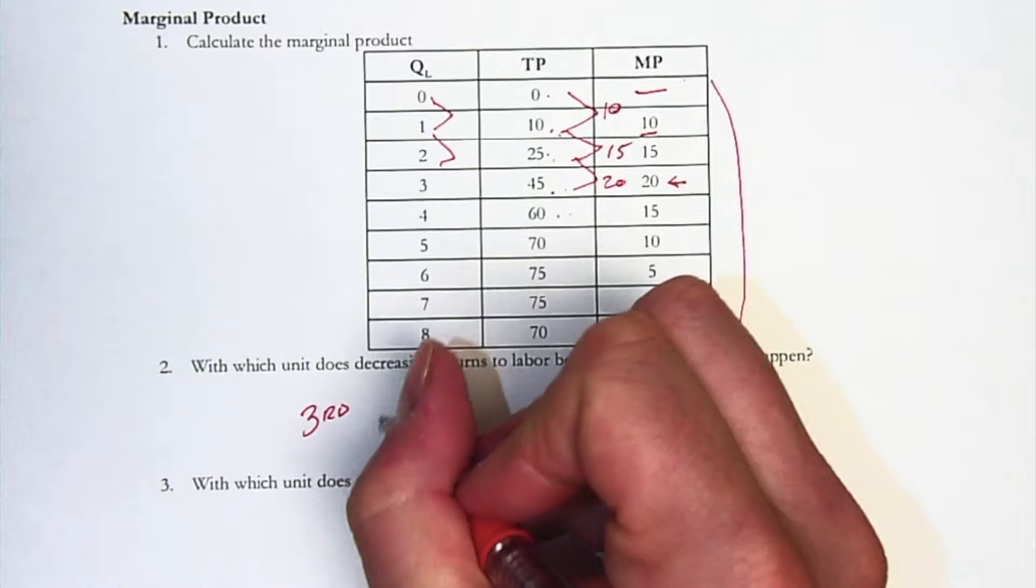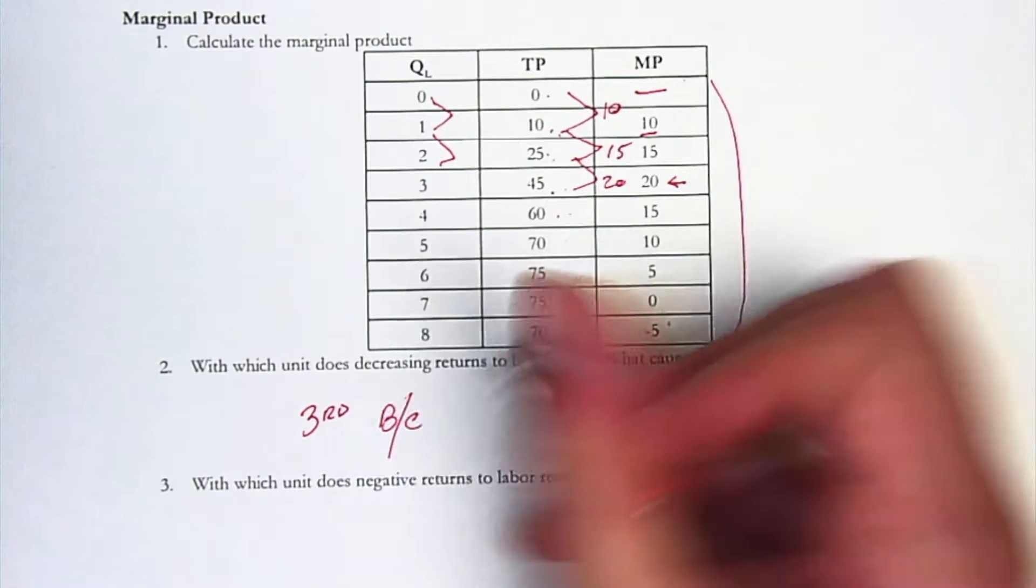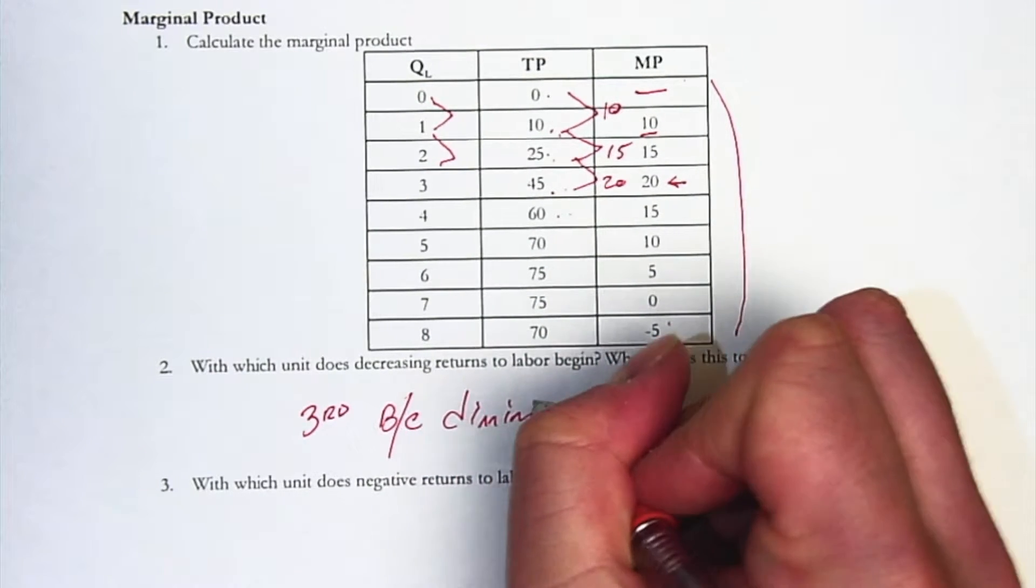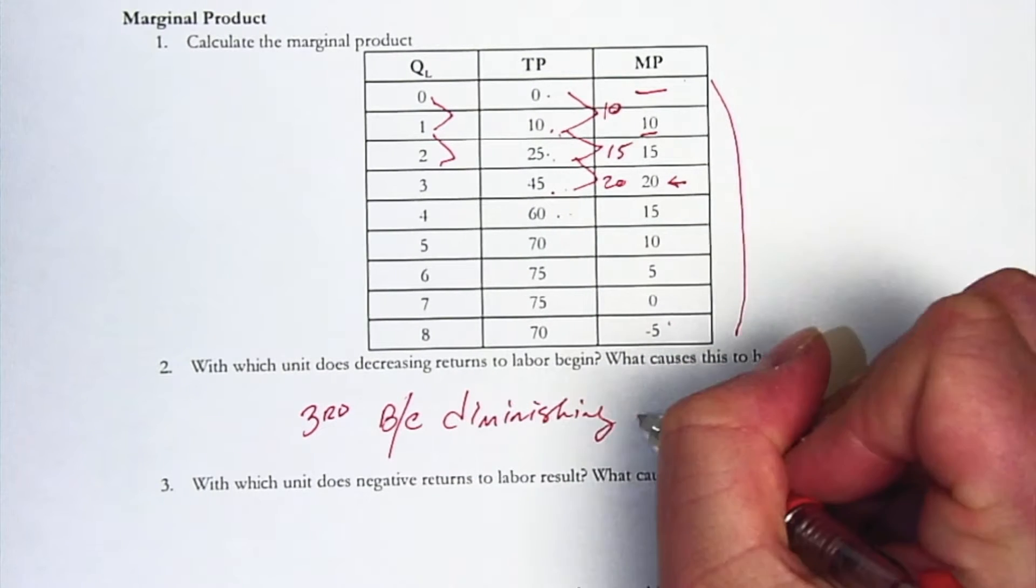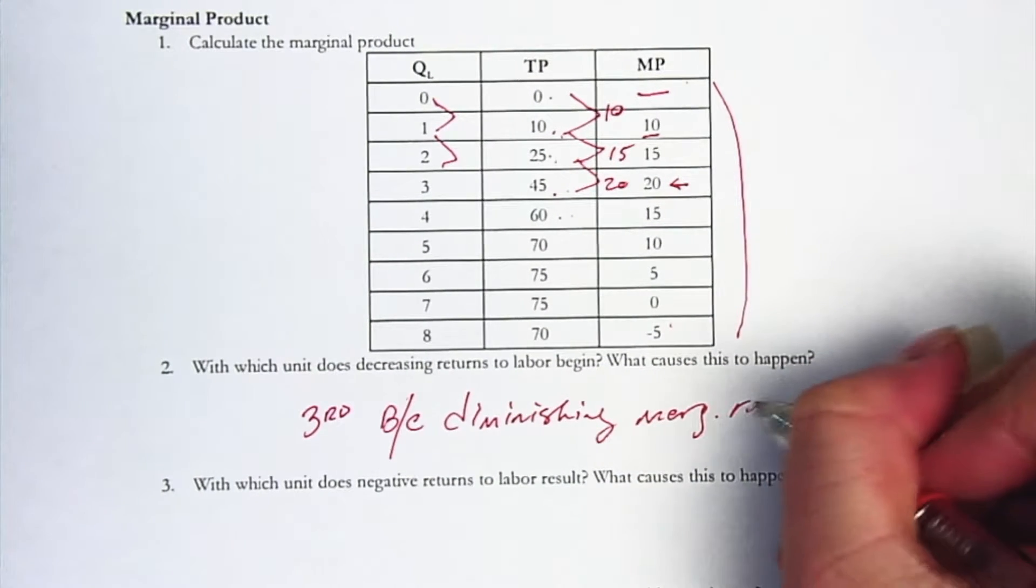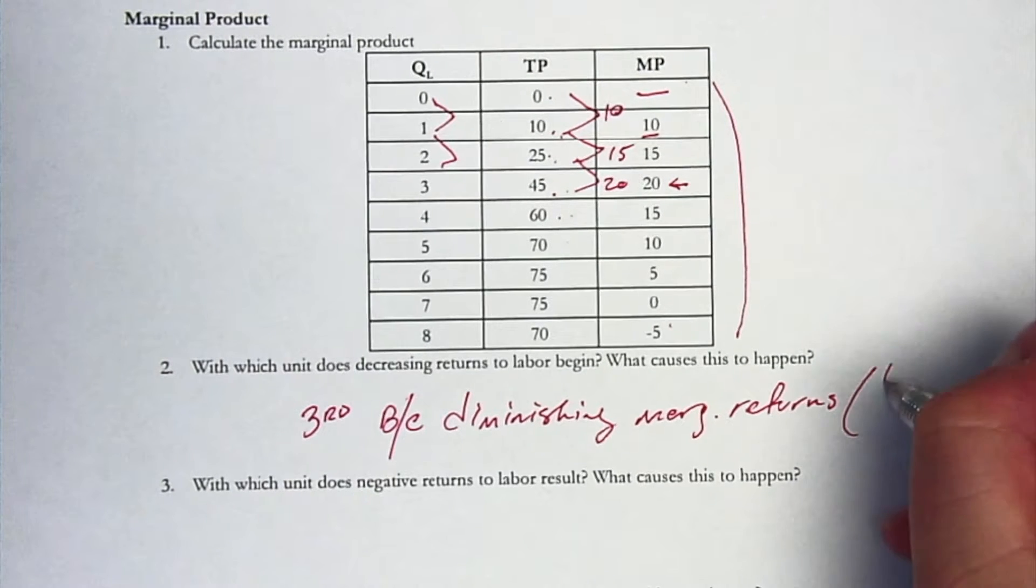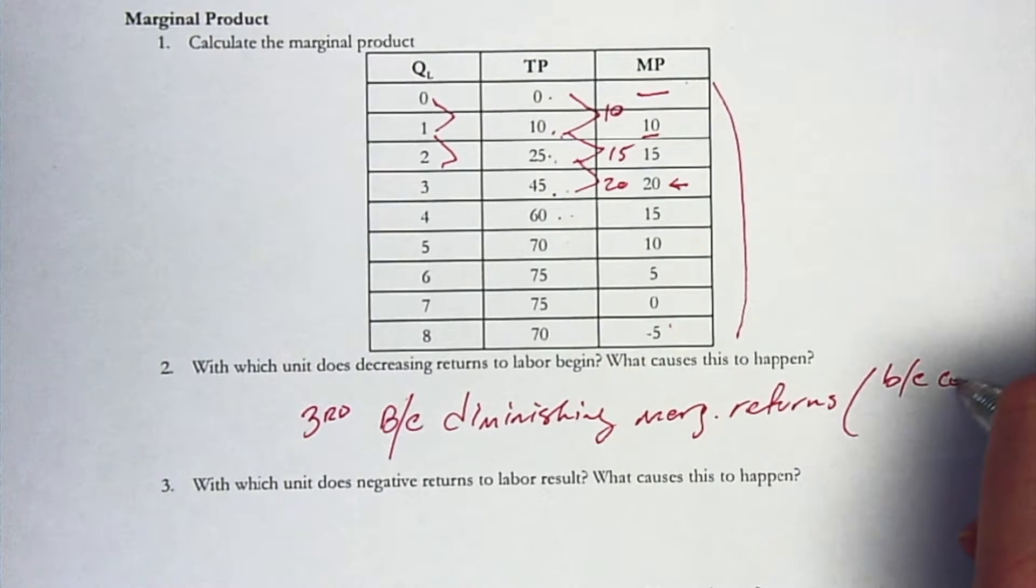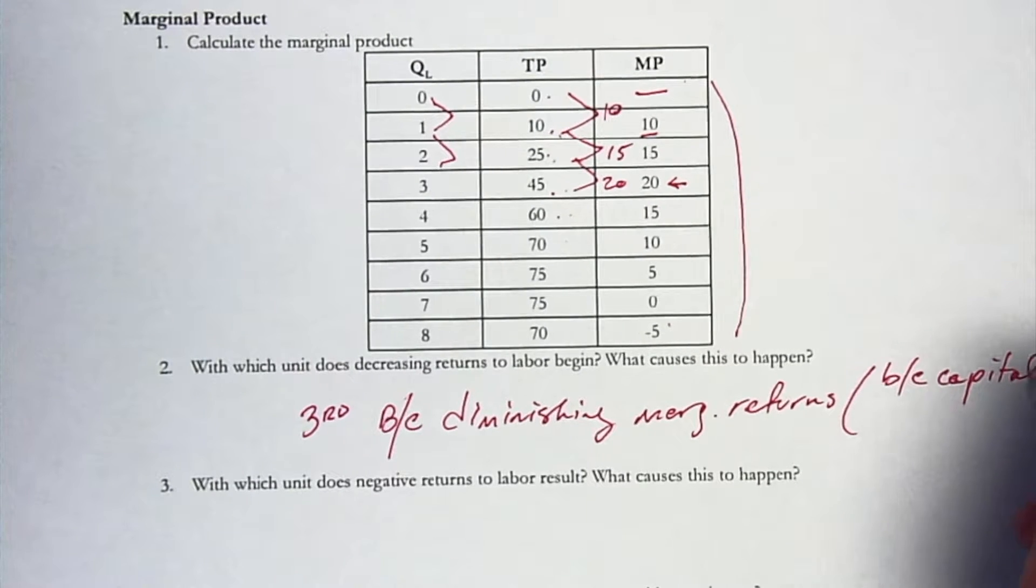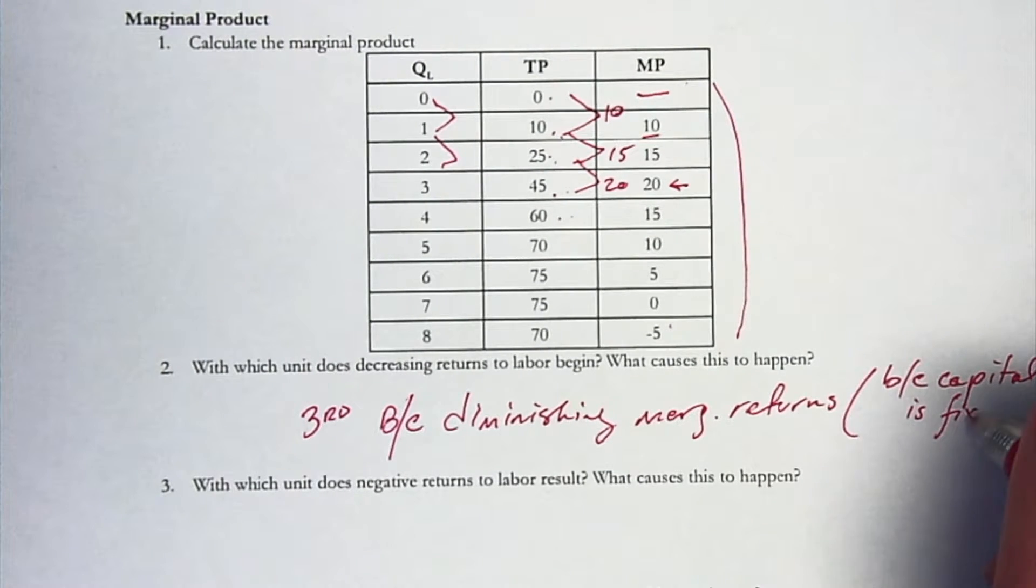So, and this is because of diminishing marginal returns. Diminishing marginal returns. And we can actually say, because capital is fixed. Because capital is fixed.